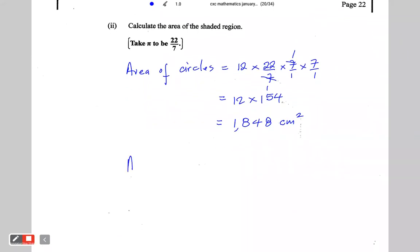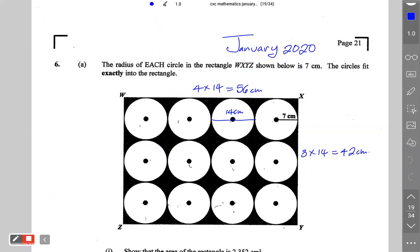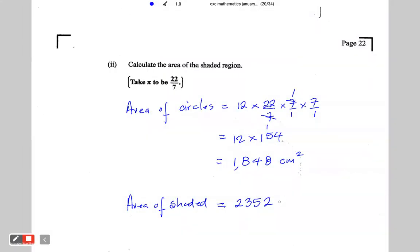So the area of the 12 circles combined is 1,848 centimeters squared. Now the area of the shaded region would be equal to 2,352, let's just double check, yes, minus 1,848. The area of the shaded region is 504 centimeters square.